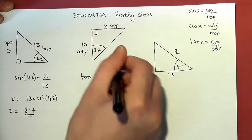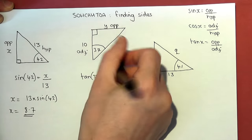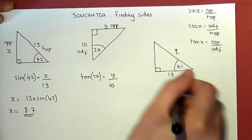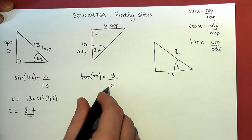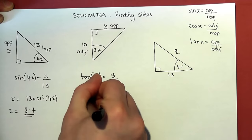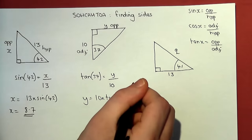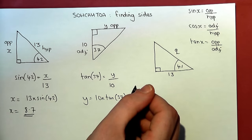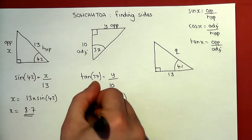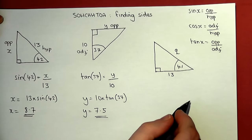Adjacent and opposite means we use tan. So tan of the angle 37 equals opposite y over the adjacent 10. To find y, I rearrange the equation by multiplying by 10. So y is 10 times tan 37. I input that into my calculator: 10 times tan of 37, and the answer is 7.5. So y has a length of 7.5.